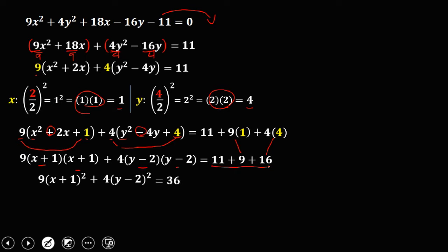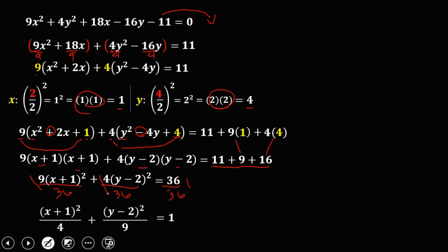Since the equation of an ellipse equals 1, divide every term by 36. So divide by 36, divide by 36, and 36/36 = 1. Reduce the fractions: 9/36 = 1/4 and 4/36 = 1/9. This gives us the standard equation of an ellipse.